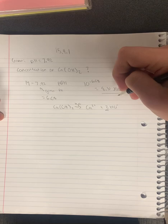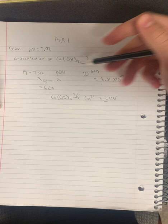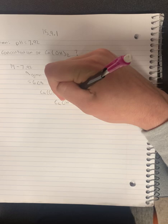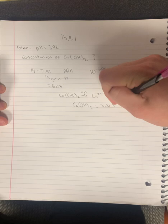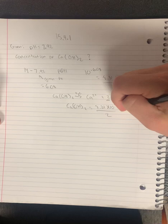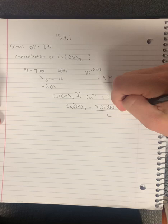So this comes out to be Ca(OH)2 equals 8.31 times 10 to the negative 7 divided by 2, since we have the 2OH-. And then this equals 4.2 times 10 to the negative 7. This is your concentration of Ca(OH)2.